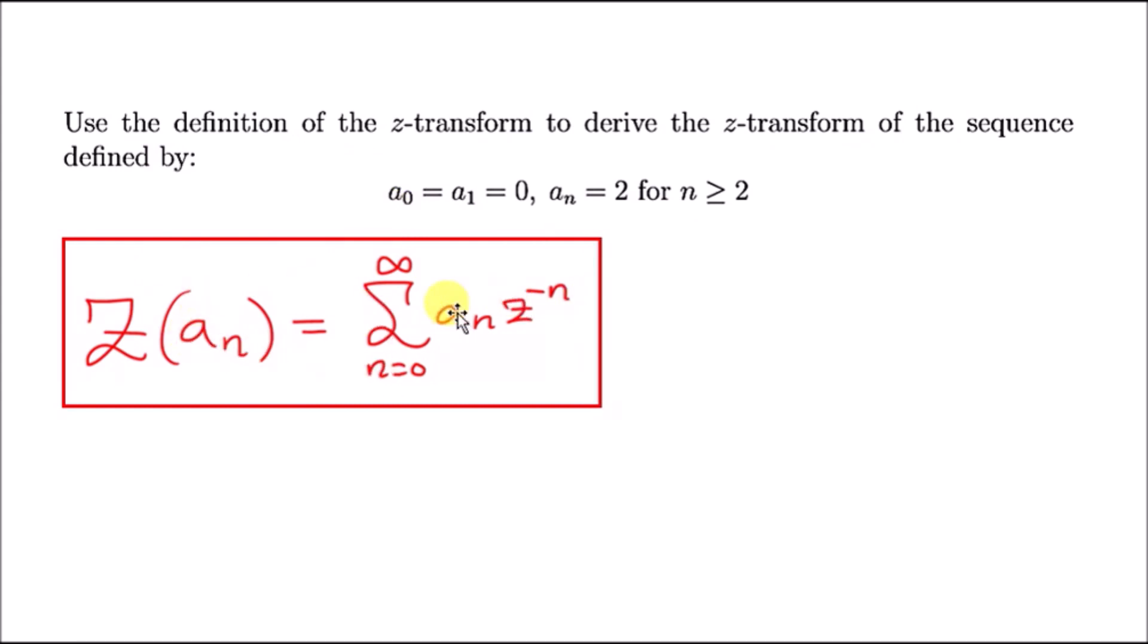Now let's expand this. Let's plug in values for n = 0, 1, 2, and onwards. When you plug in n = 0, you're going to have a_0 which is going to be 0. Next, when you plug in n = 1, you're going to have 0 again.